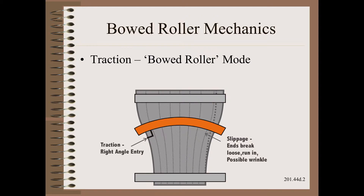Understanding why this is requires understanding how the bowed roller works. Recall from our Web 101 class the mechanics of the bowed roller in the bowed roller mode. The streamlines or paths of different segments of the web are defined largely by the normal entry law that was also covered in our class. These mechanics apply to both a full-width web as well as a web slid into individual lanes.